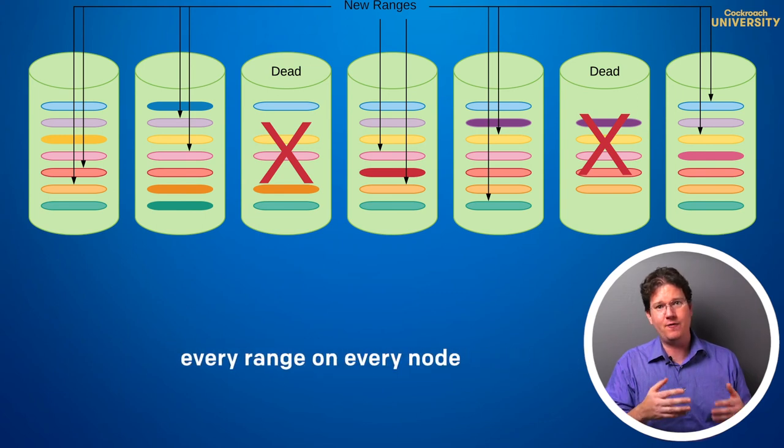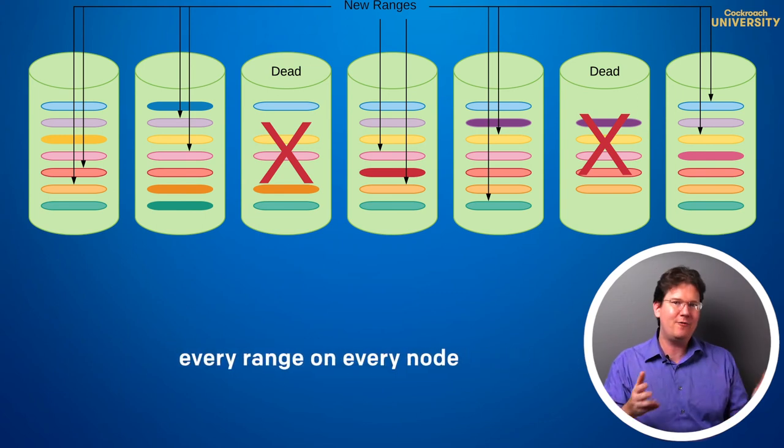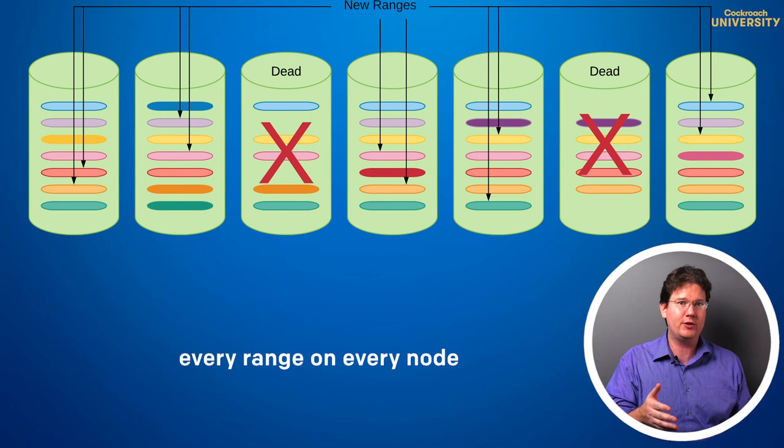And with a replication factor of five, all of our ranges are replicated to every node, so any further node failures will result in persistent under-replicated ranges until the cluster can get back to five.